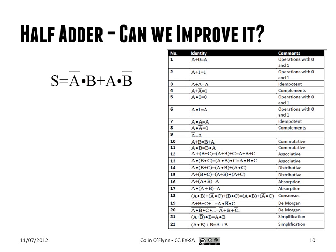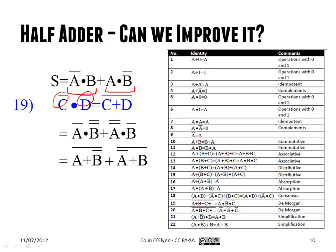We can improve it using the Boolean algebra we've been going through. In this example, we're using DeMorgan's law a number of times — applied on each half of it. We can remember that DeMorgan's needs both variables to be complemented, so where we have a single variable complemented, we effectively double-complement one variable to get the complement over both.